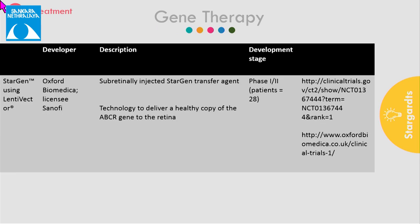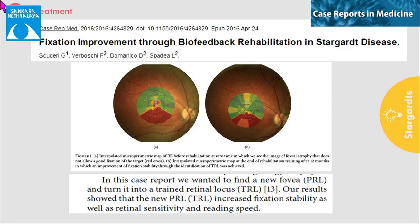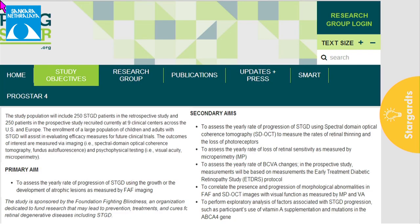Gene therapy using a lentivirus vector has also been tried. Another technique to improve quality of life is biofeedback rehabilitation, in which with the help of microperimetry a preferred retinal locus is selected and the patient is asked to move the eyes according to audio signals to make it a trained retinal locus. The PROSTAR studies comprise retrospective and prospective longitudinal studies with 250 patients recruited from nine centers across the US and Europe, with nine reports published to date.